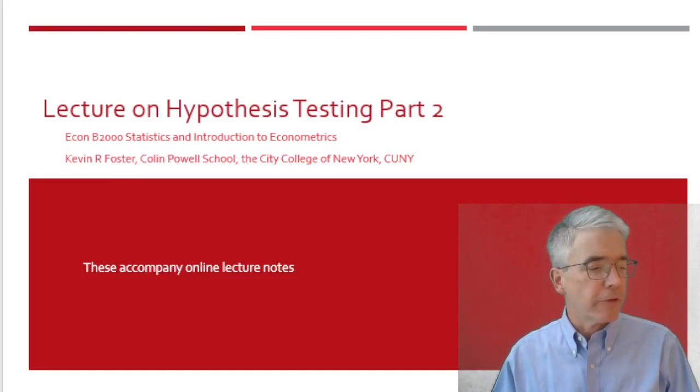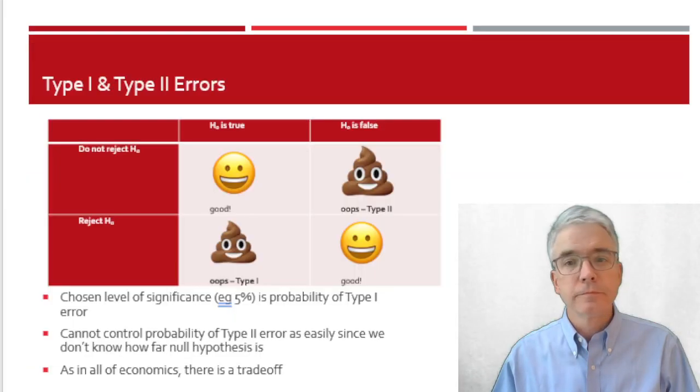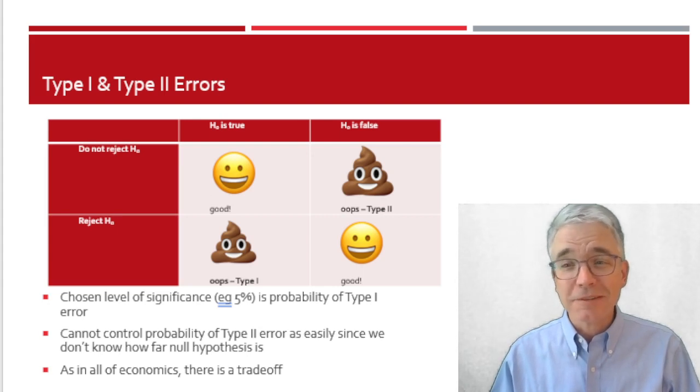We'll talk more about hypothesis testing. We often talk about type 1 and type 2 errors, which are just about the most boring possible labels, but they're important. Statisticians and economists are just not really interesting people. Sorry.